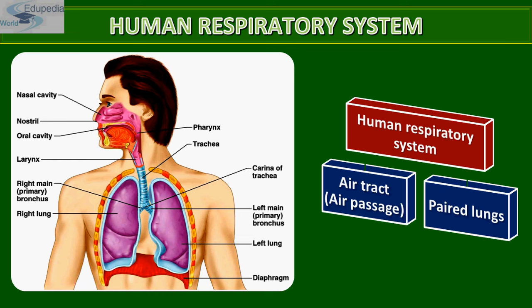The trachea, primary, secondary and tertiary bronchi, and the initial bronchioles are supported by incomplete cartilaginous rings. Each terminal bronchiole gives rise to a number of very thin, irregular-walled, vascularized bag-like structures called alveoli, also known as air sacs. The branching network of bronchi, bronchioles, and alveoli comprises the lungs. The two lungs are covered by a double-layered pleura with pleural fluid between them, which reduces friction on the lung surface.